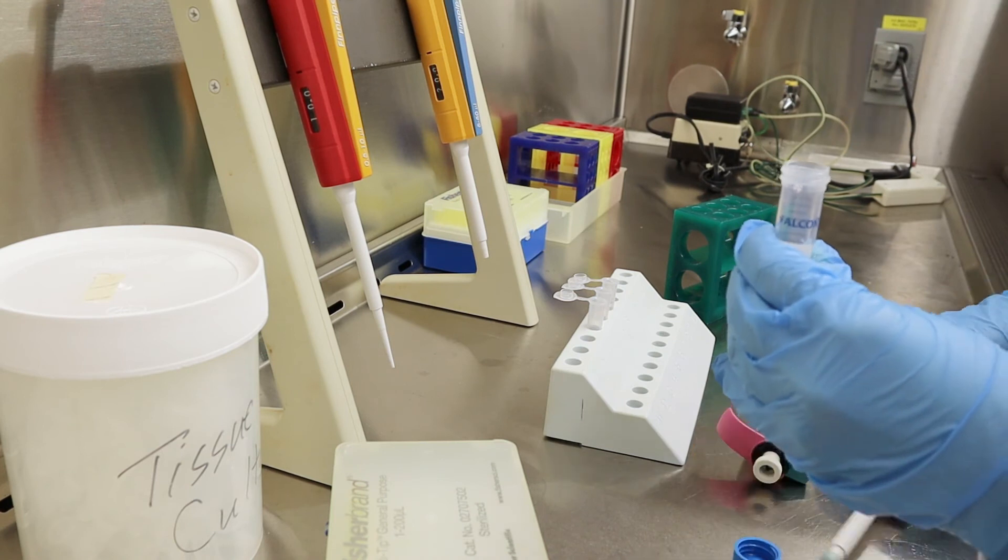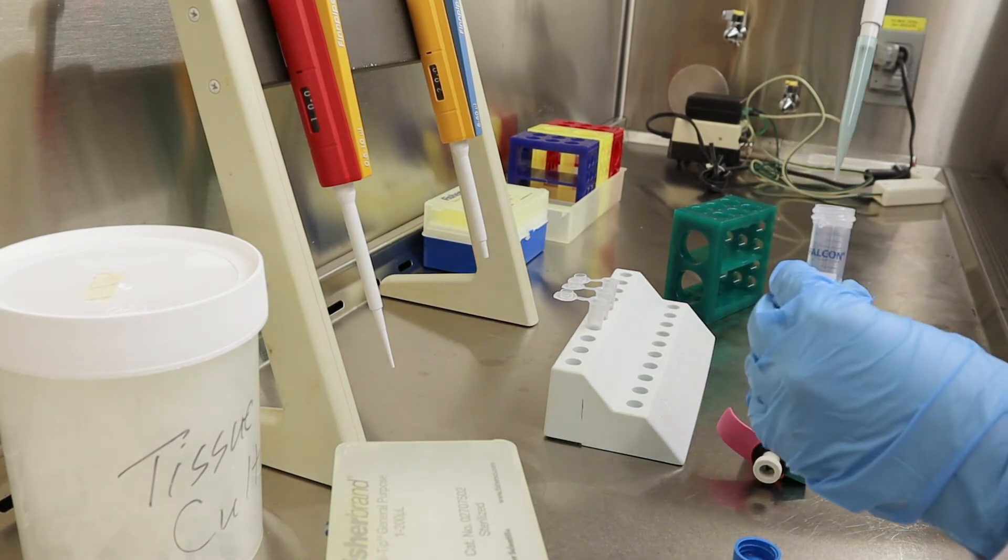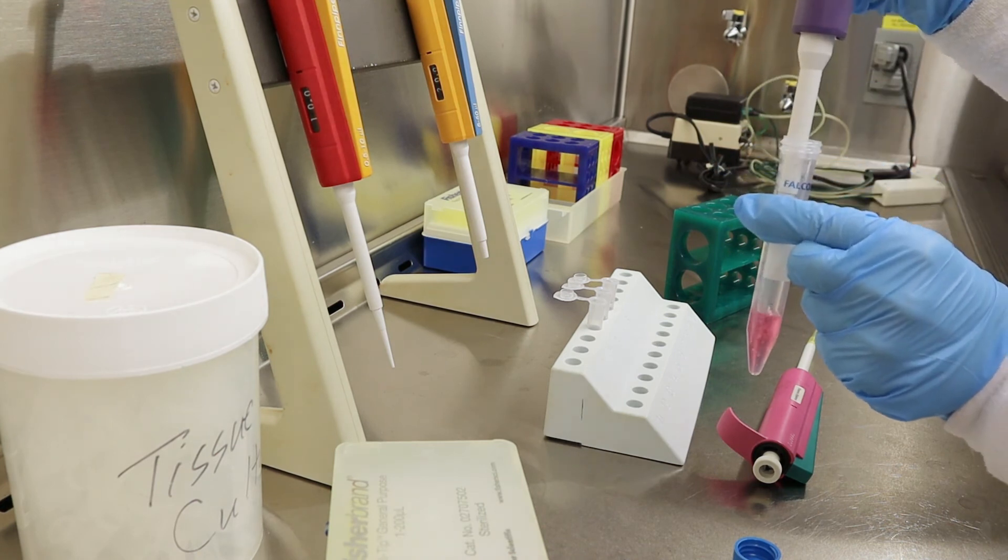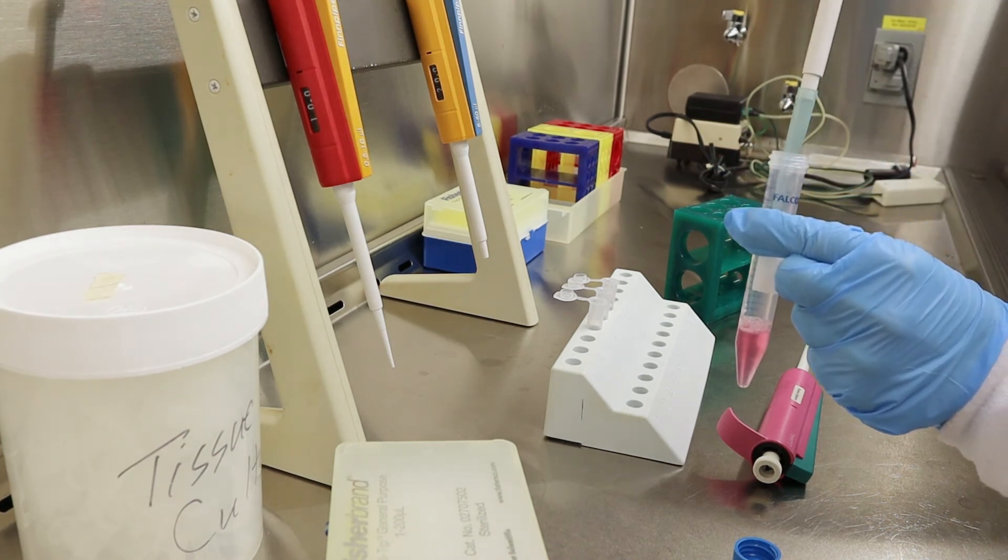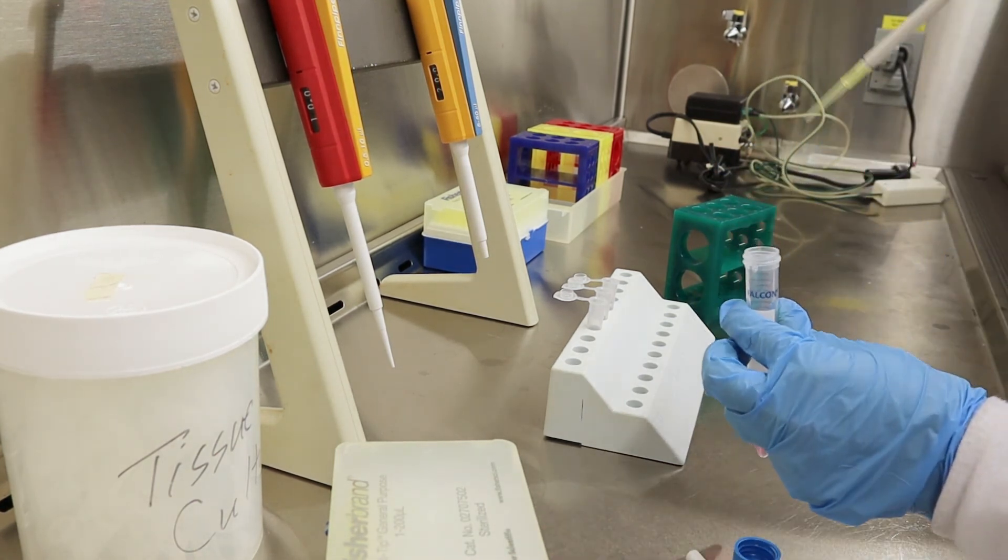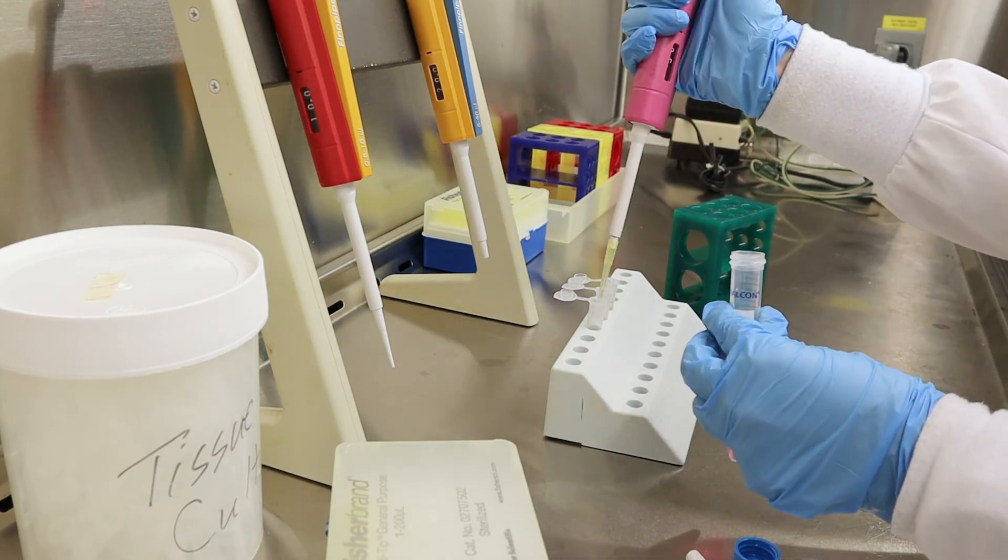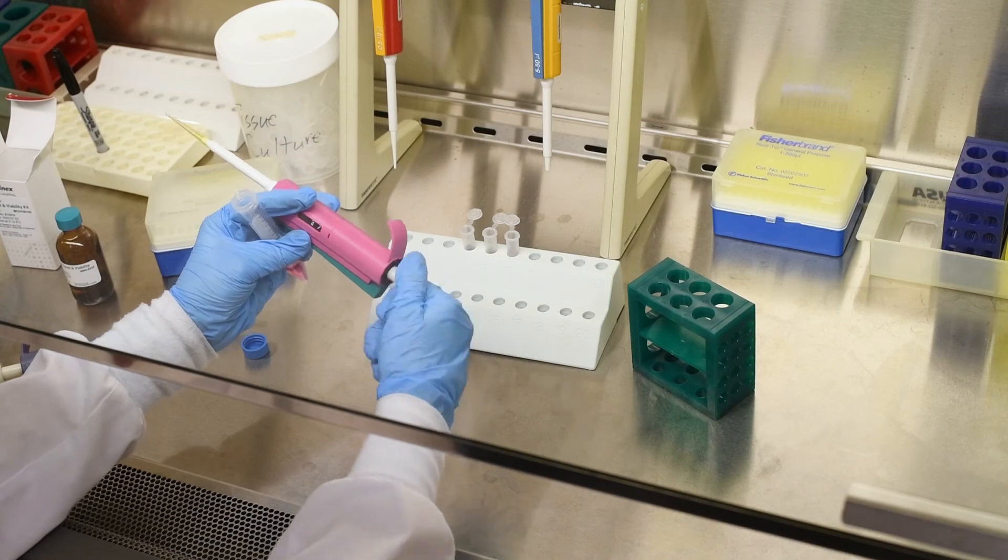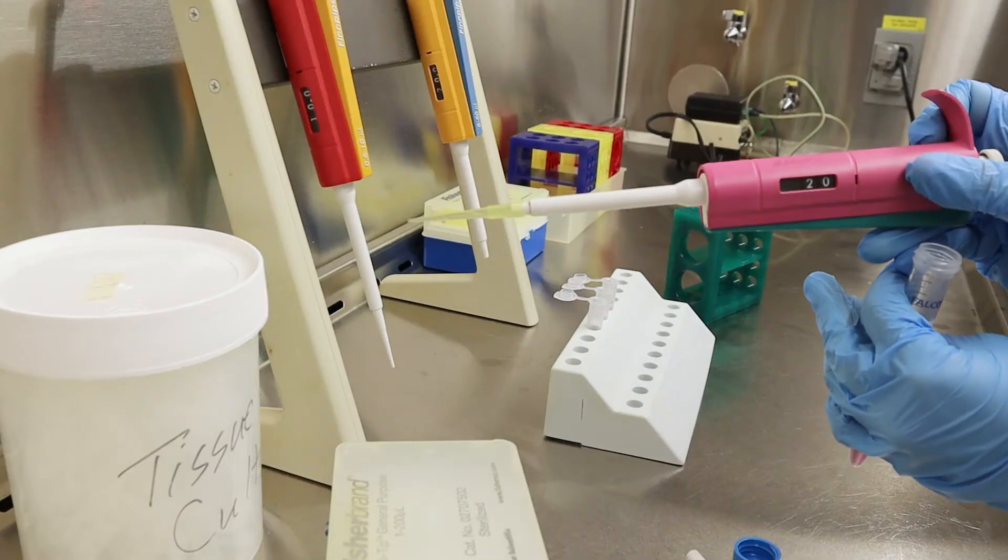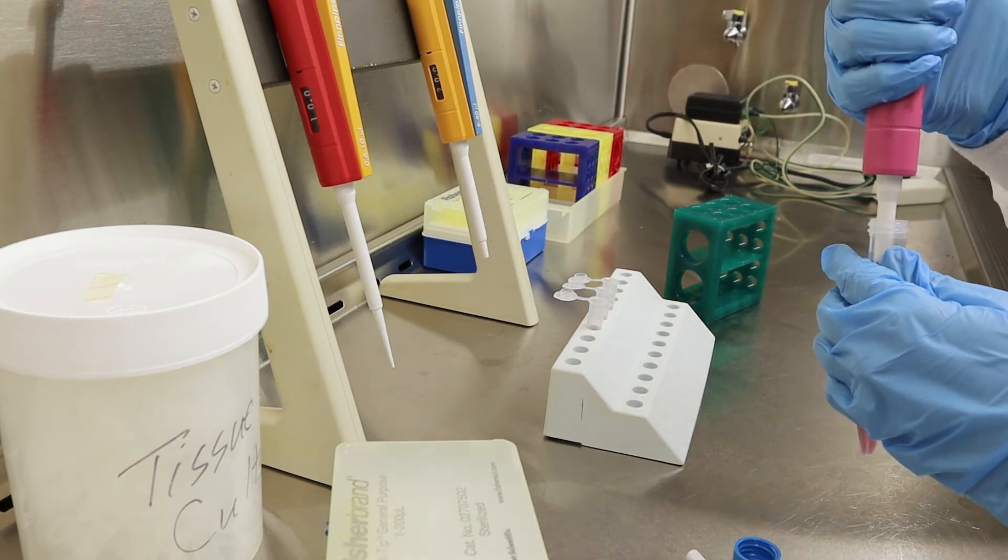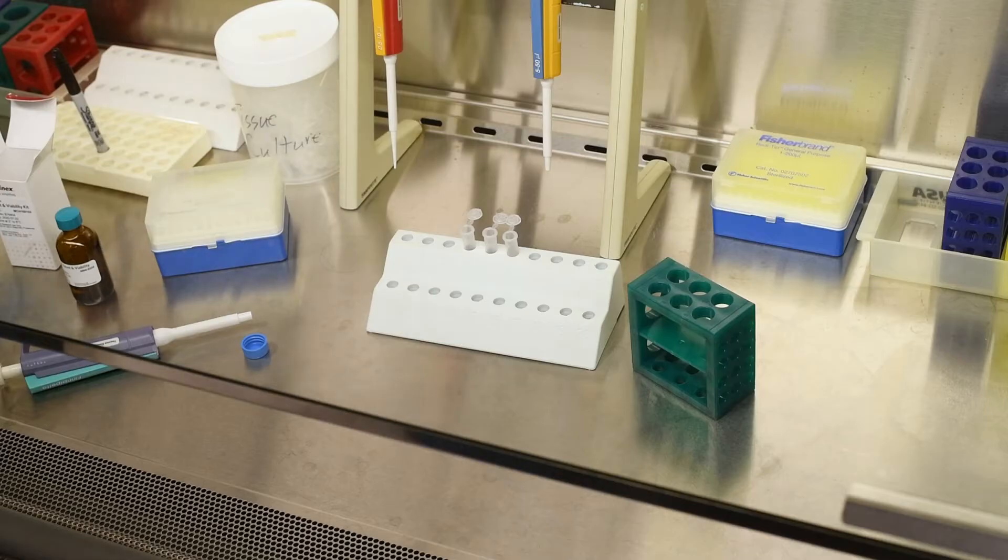Using the pipette, triturate your suspended cells to prevent clumping and to ensure even distribution. Transfer 50 microliters of cells into the first tube that contains 450 microliters of reagent. Repeat this process for the remaining two tubes with 20 microliters of cells each. The cells will need to sit in the reagent for five minutes in order to be fully stained.